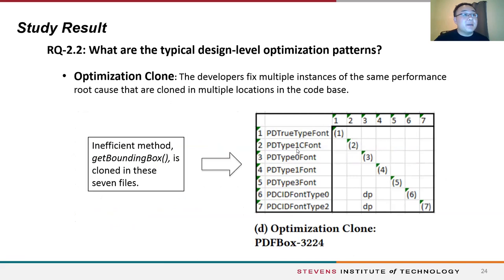Another typical pattern is optimization clone. In this case, the same performance issue root cause is cloned in multiple locations of the code base, and the involved source files are usually structurally independent from each other. In the example, all the classes represent a certain type of font, and all have a method named getBoundingBox which suffers from repeated computation. The method is cloned in seven font classes, so the optimization is also cloned in seven locations.